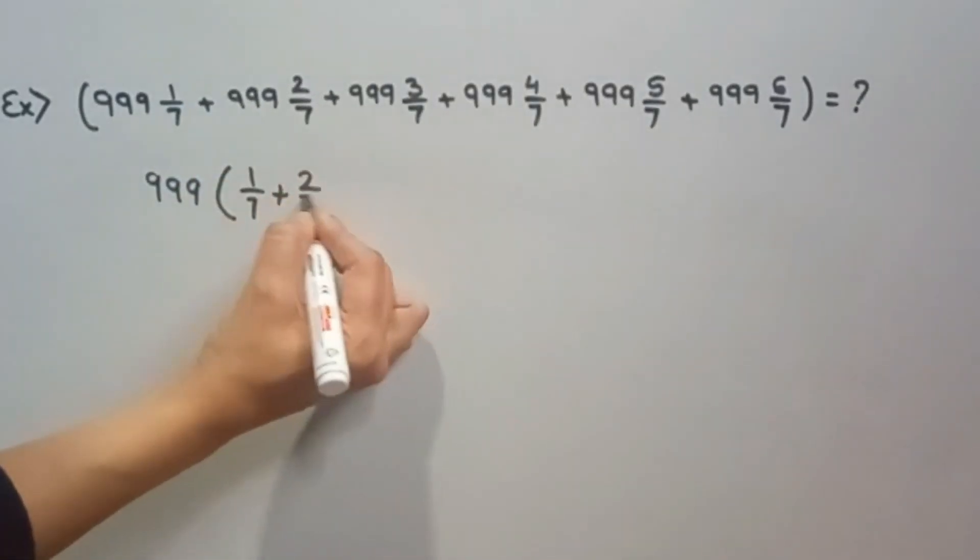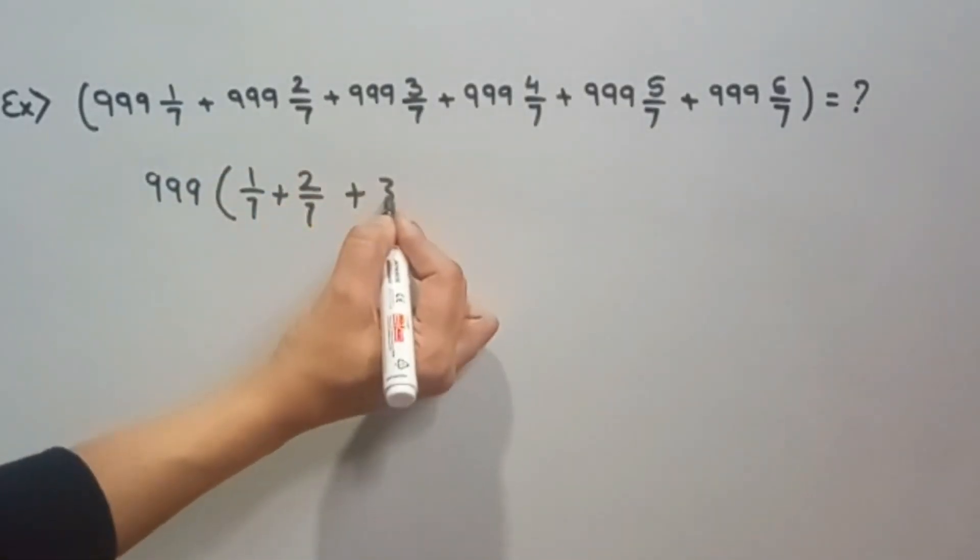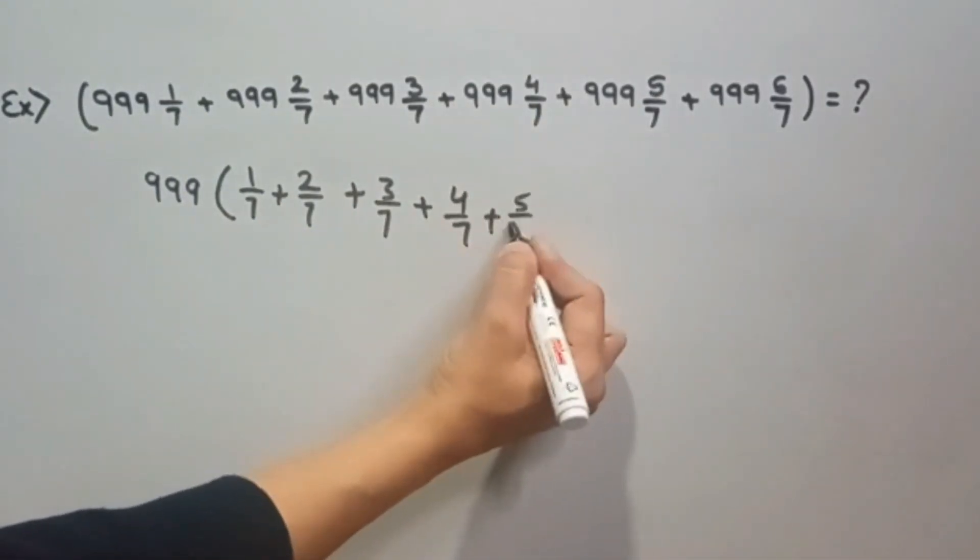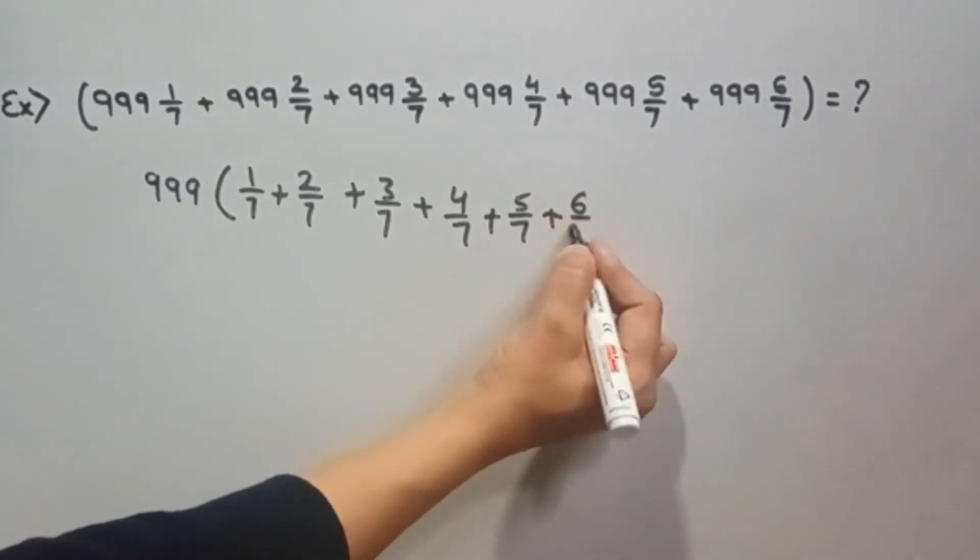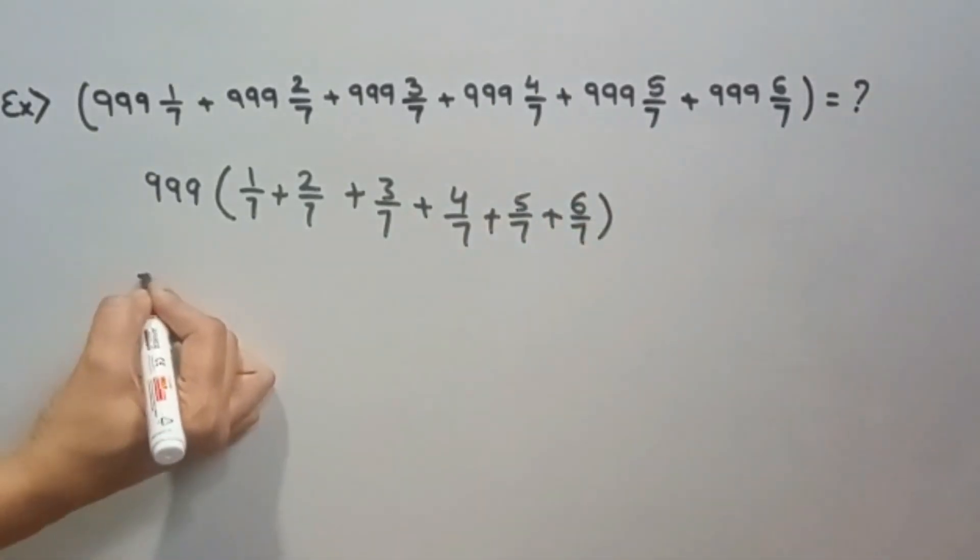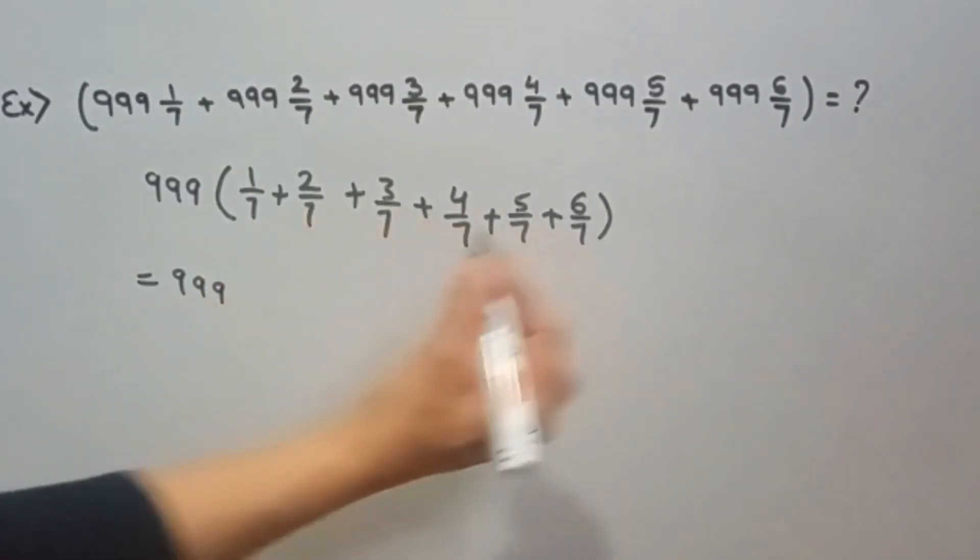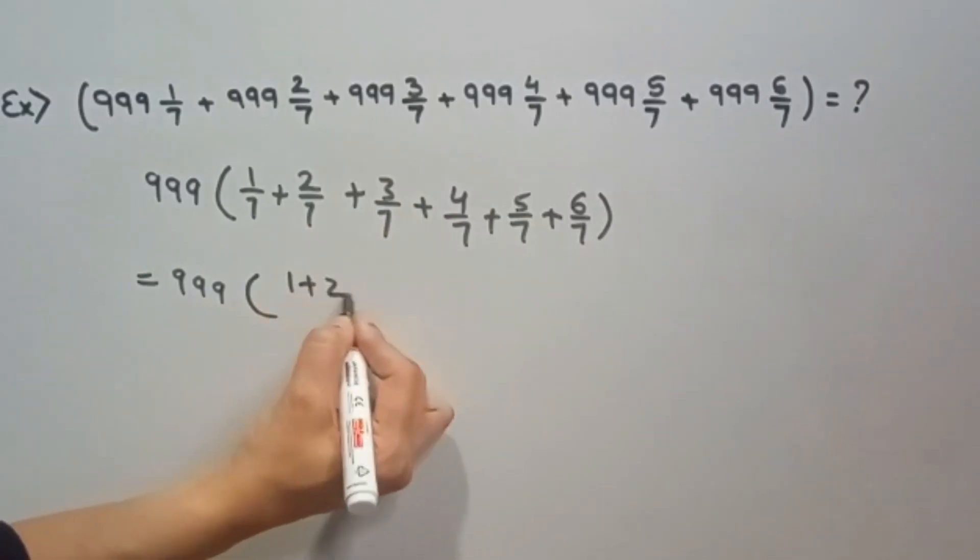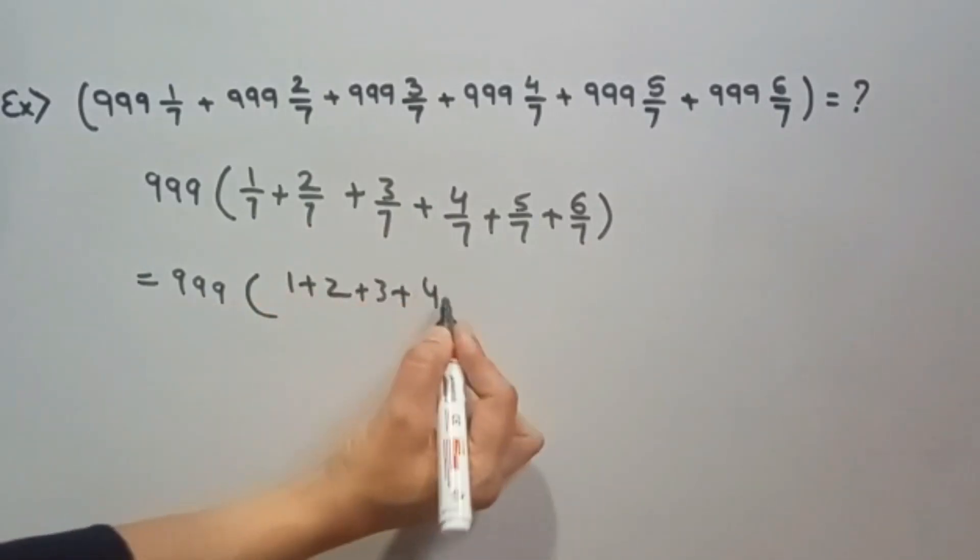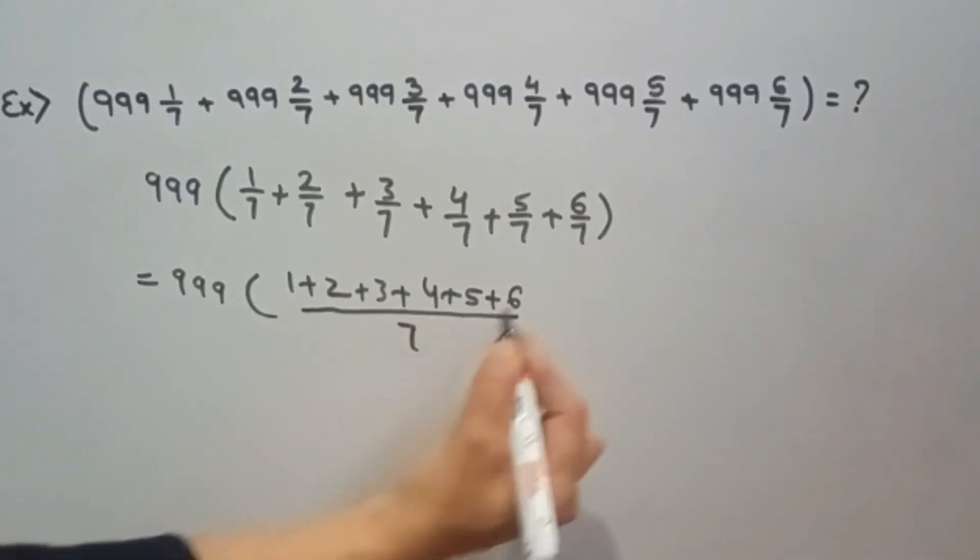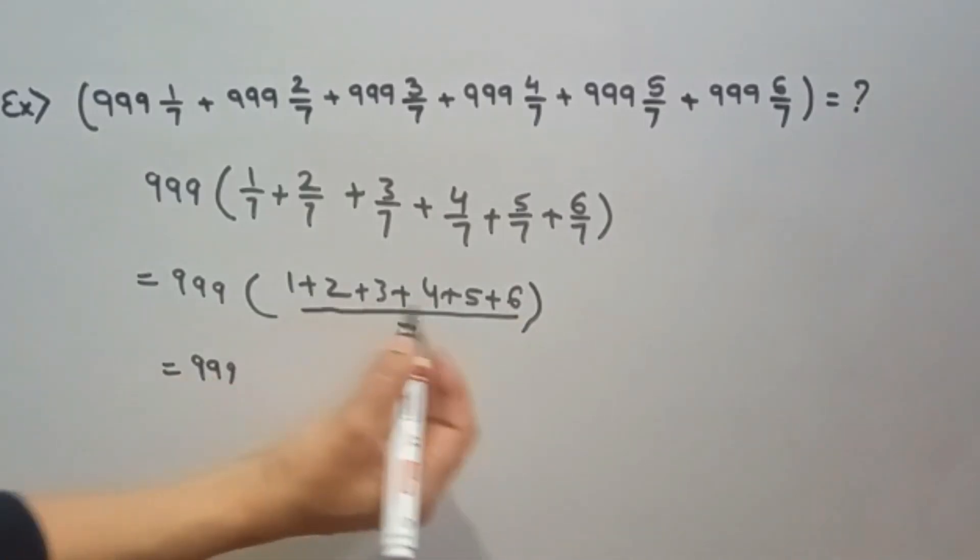Now inside the bracket, 1 by 7 plus 2 by 7 plus 3 by 7 plus 4 by 7 plus 5 by 7 plus 6 by 7. 999, see denominator is the same, so we will add the numerator. 1 plus 2 plus 3 plus 4 plus 5 plus 6 divided by 7.